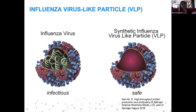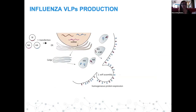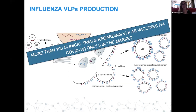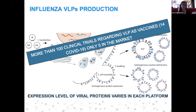Influenza VLPs are enveloped viruses with no capsid. You only need the plasmids for the influenza proteins, transfect them into a cell, and by self-assembly they will bud and be released. Even though there are more than 100 clinical trials regarding VLPs as vaccines — 14 for COVID — only five have reached the market. Some researchers think this may be because protein expression varies a lot depending on the platform and plasmid used, making it a very uncontrollable method.